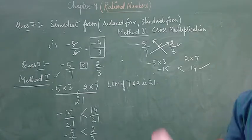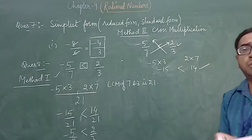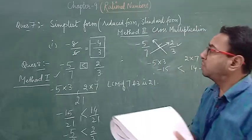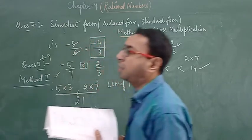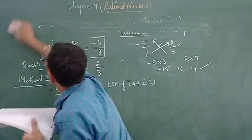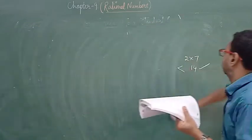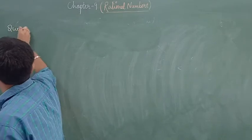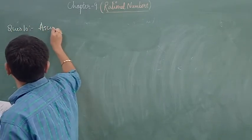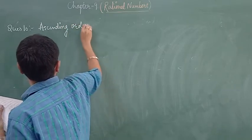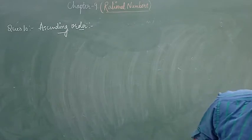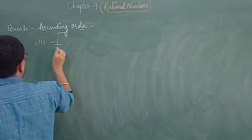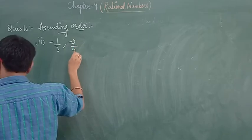Question number 9 is also the same — it is again a comparing exercise, so you can do it the same way. Question number 10: ascending order. We have to arrange in ascending order. Let me take the second part: minus 1 by 3, minus 2 by 9, and minus 4 by 3.